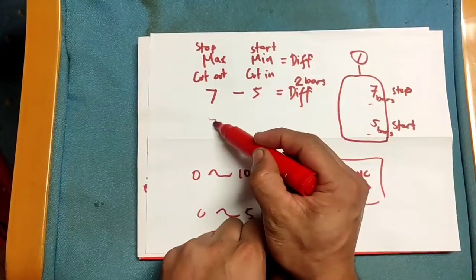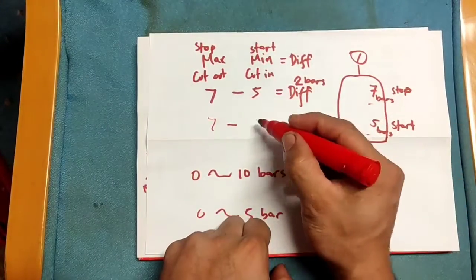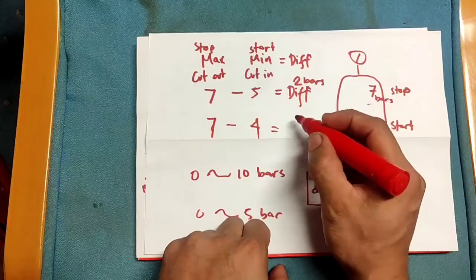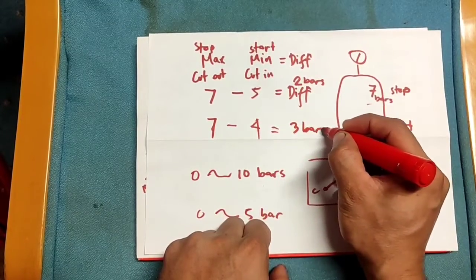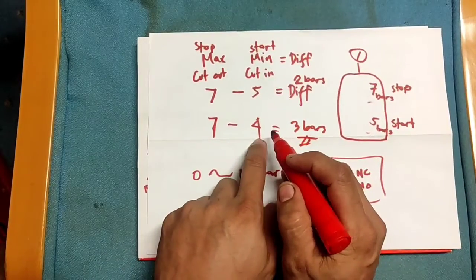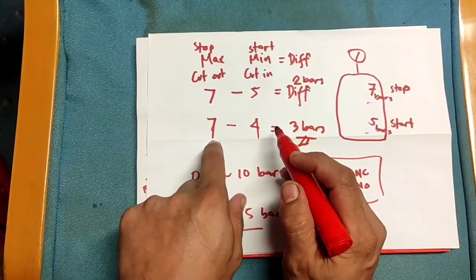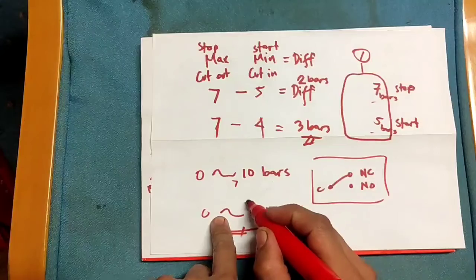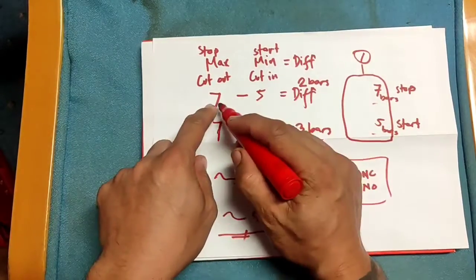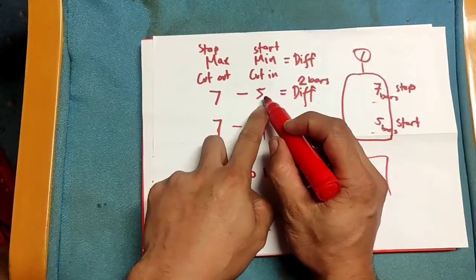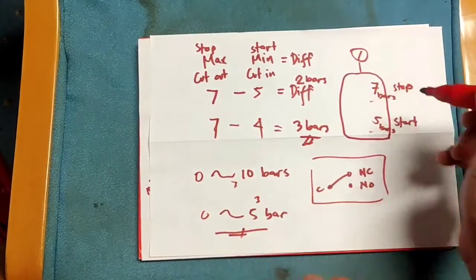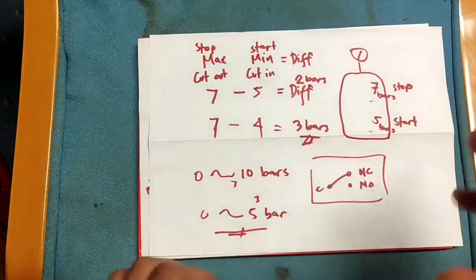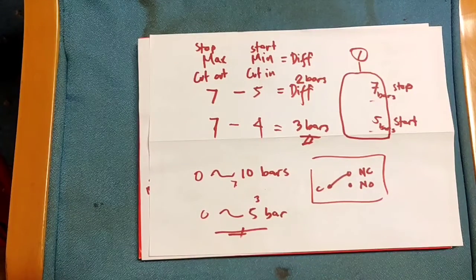For example, you want to stop the pump or compressor at 7 bars and start it at 4 bars. Set the range knob to 7, and set the differential knob to 3 bars. This way, the unit will start at 4 bars and stop at 7 bars. Set 7 on the range and 3 on the differential — so 7 minus 3 equals 4, meaning it starts at 4 and stops at 7.